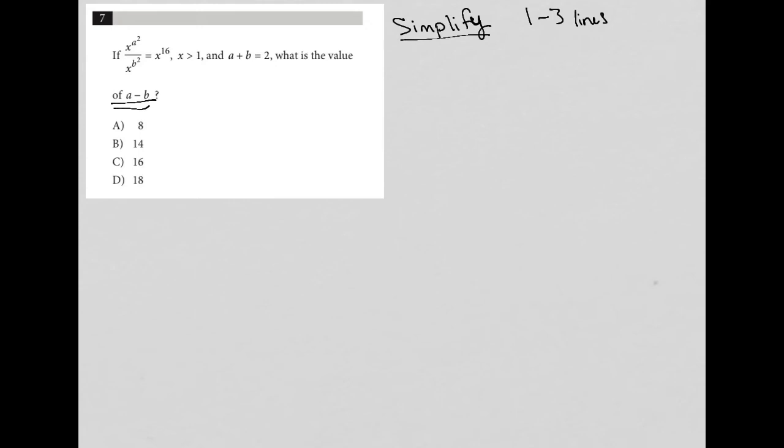Well, what can be simplified here? So this statement, this equation can be simplified. I'm going to rewrite it. x to the a squared over x to the b squared equals x to the 16th.